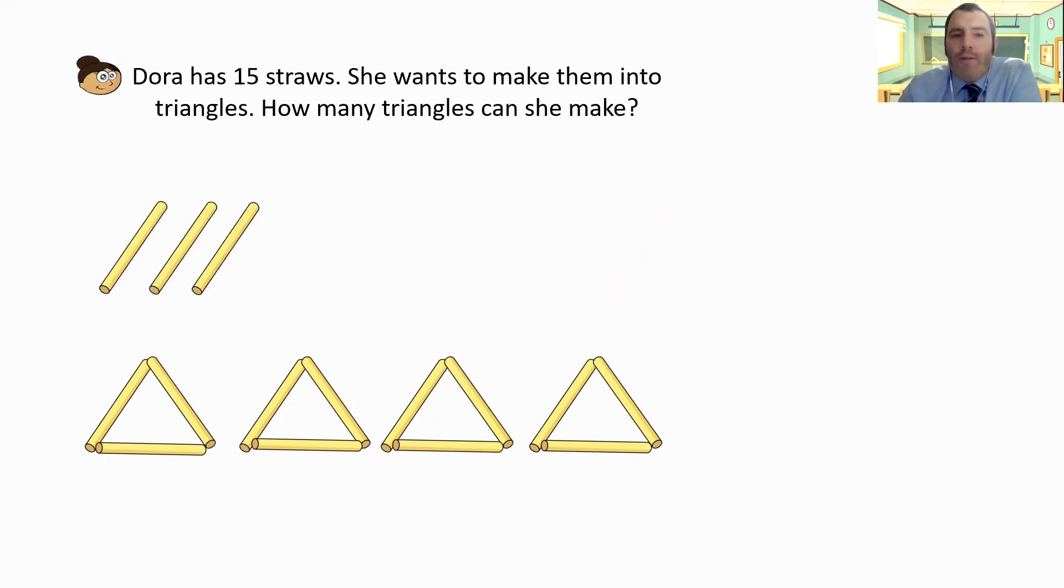Now, Dora's got 15 straws. So I already know I can make four complete triangles. So surely the answer to this is four remainder three. It's not. And I can hear you all shouting at me that it's not because my remainder is the same as the number I'm dividing by.